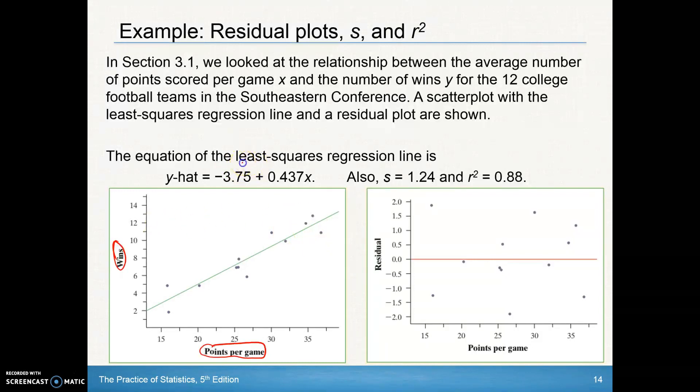If we do the least squares regression line, that equation comes out to be y-hat equals negative 3.75 plus 0.457x. If we look at the residual plot of this data, these are the different residuals. That s-value is that average distance, or the typical distance each observation is from the prediction line.